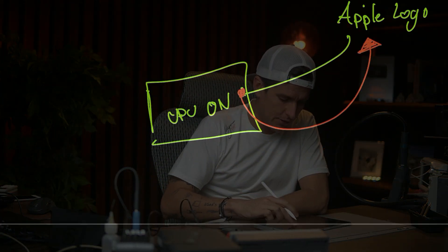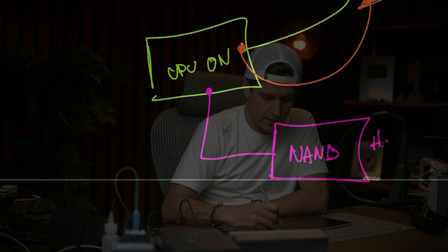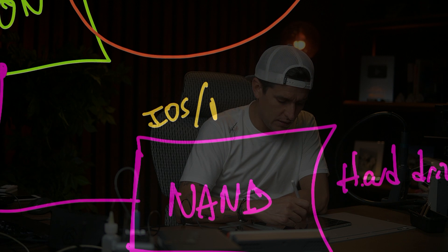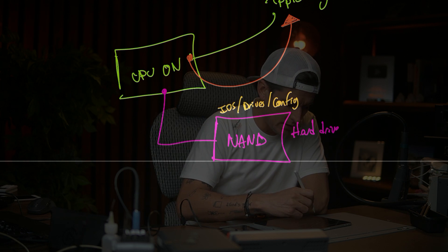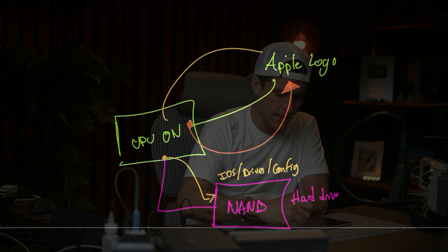When the CPU is powered on, it needs to go to the hard drive to extract all the drivers, configuration, and customer data. On an iPhone, we call this the NAND, because the NAND is our hard drive. Inside it we have the iOS, drivers, and all the config. When the CPU is on, it connects with the NAND to extract all this information.